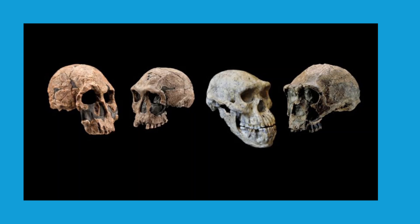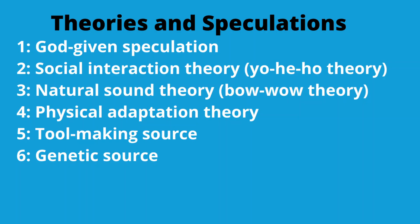We are going to talk about all these speculations and theories about the origin of language. Here is the list: the God-given speculation, the social interaction theory or yo-he-ho theory, the natural sound theory, pow-wow, the physical adaptation theory, the tool-making source, and the genetic source.